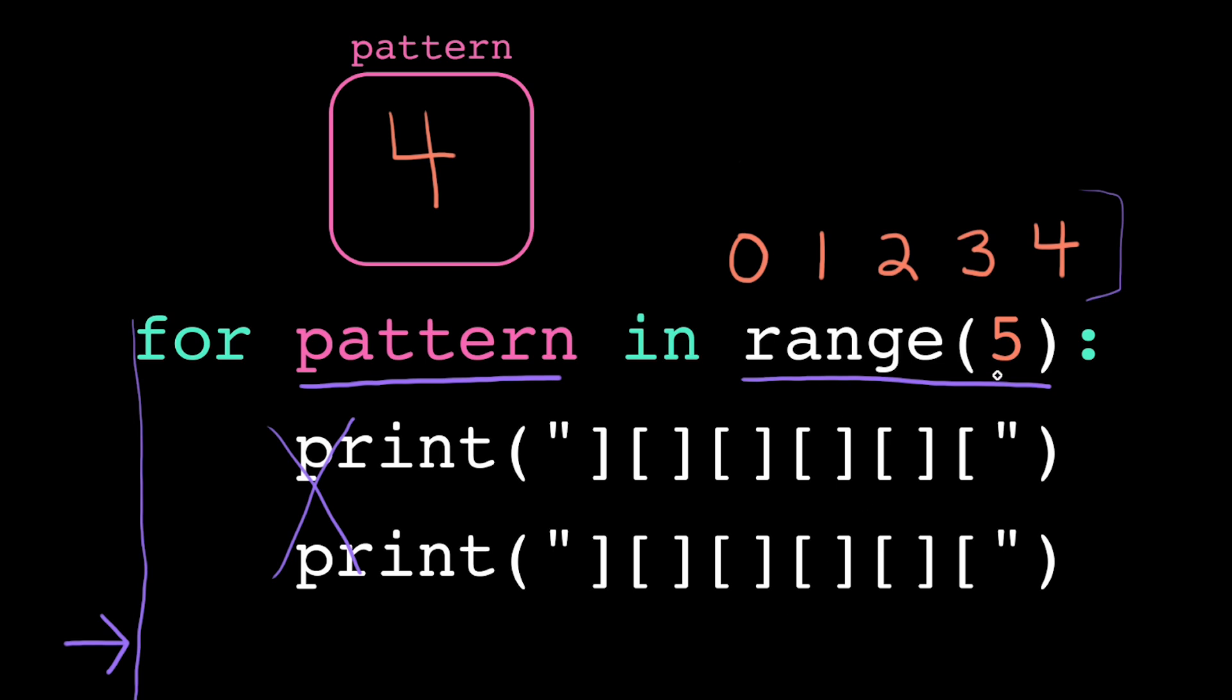So our for loop with range 5 repeated 5 times. Once with the loop variable set to 0, to 1, to 2, to 3, and to 4.